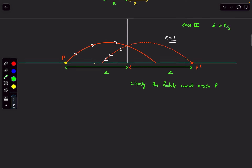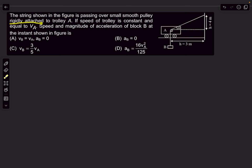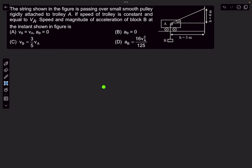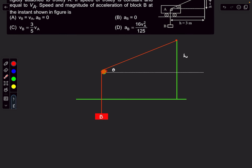Problem 2: a string passes over a smooth pulley rigidly attached to trolley A. The trolley moves at constant speed vA. We need to find the speed and magnitude of acceleration of block B at the instant shown. Let's draw a diagram with just the pulley A. The ground level is below, and the pulley moves in the x-direction at speed vA.